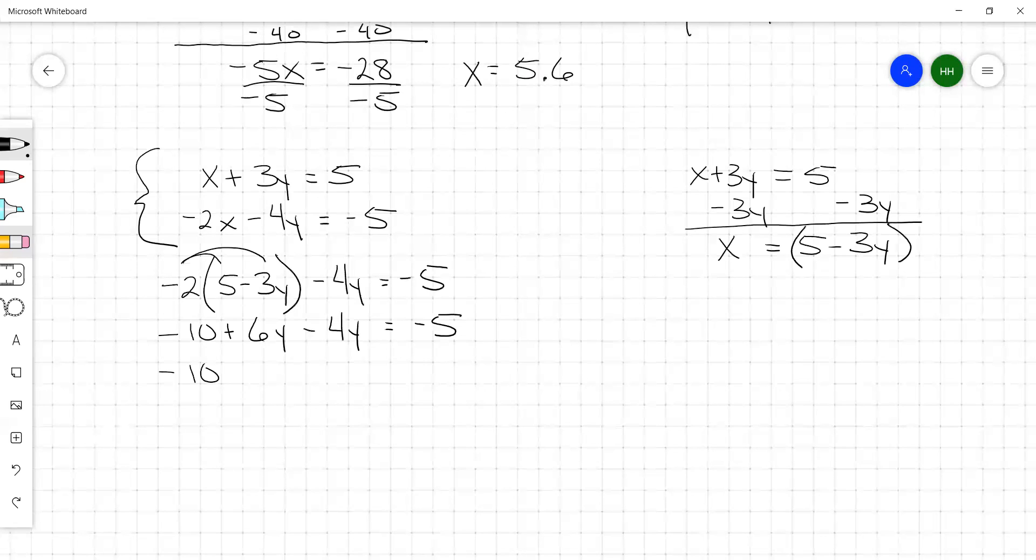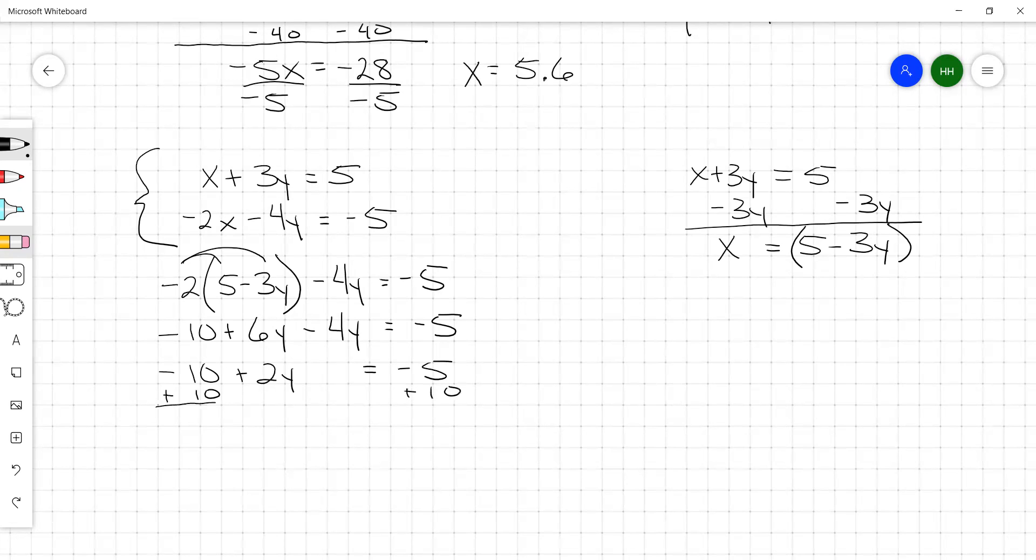Combine like terms. Our negative 10 plus 2y equals negative 5. Add 10 to each side. So 2y is going to equal 5 and then divide by 2. We get y equal to 2.5.